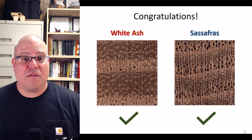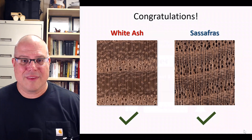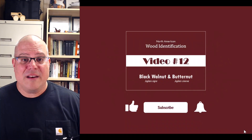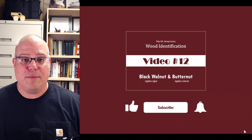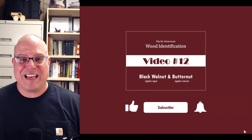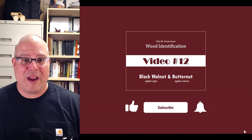And that's all for today. Congratulations on learning how to identify two new North American hardwoods. Now that we've covered several ring porous woods that exhibited banded, vasocentric, aliform, and confluent parenchyma, we'll show you next time two semi-ring porous woods that feature diffuse and aggregate — that is, short-line — parenchyma: black walnut and butternut.